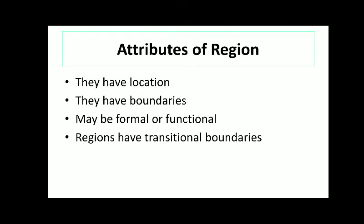Next let's understand the attributes of a region. The most important attribute of a region is that it has a location. The Himalayan region has a proper location — we can say that the Himalayan region is to the north of the Indian subcontinent. So a particular region definitely has a location, it is a particular space. For example, the coastal zone is a location — besides the seas and oceans you will find the coastal zone. So we can say that it is a particular region or a particular location.